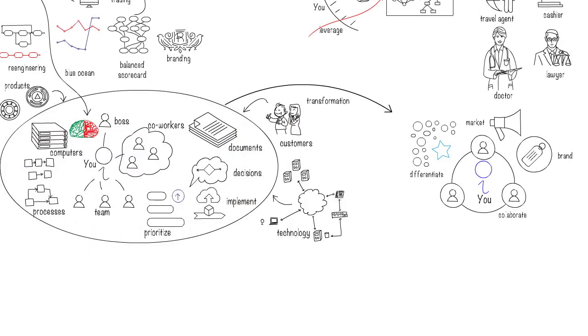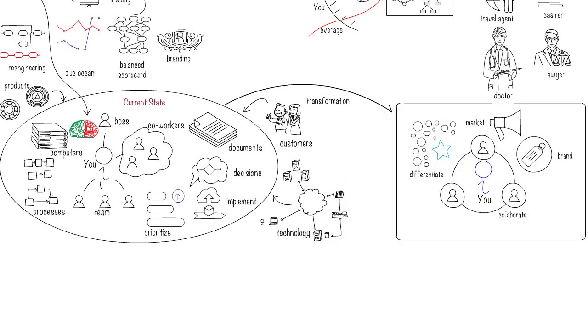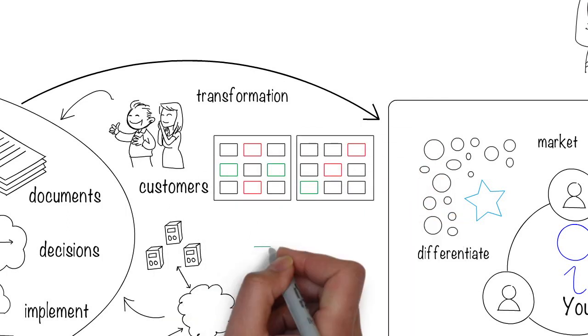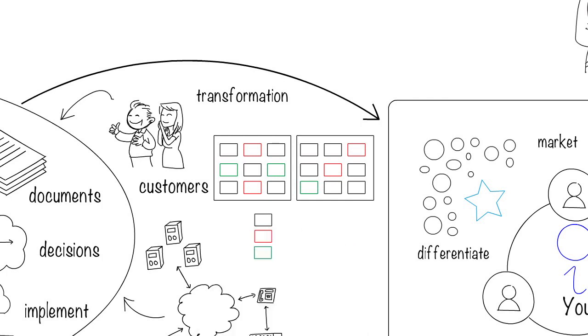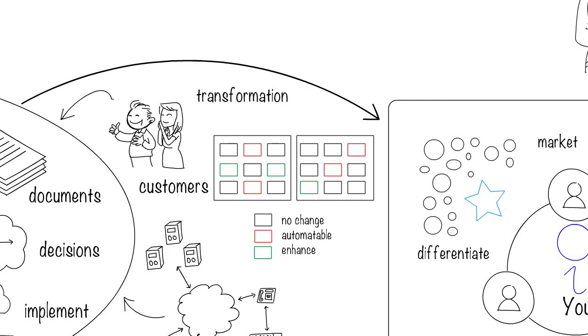You have to first understand your current state, create a highly likely possibility of the future, figure out your current capabilities, figure out which ones are likely to be automated so that you can focus on enhancing the others, and take steps to transform yourself to be valuable in that future.